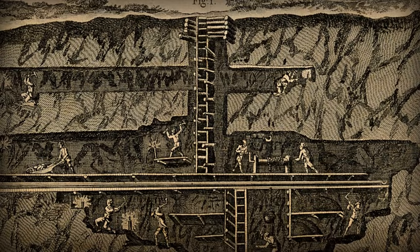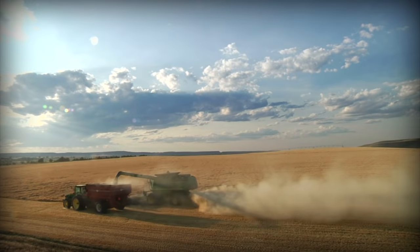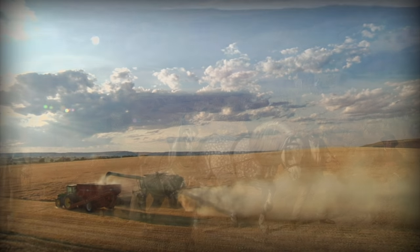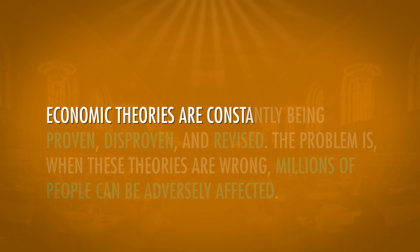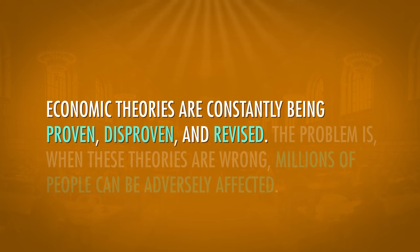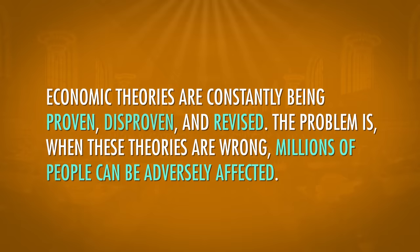But Malthus was writing at the beginning of the Industrial Revolution. He didn't factor in advancements in technology, agriculture production, or transportation. So with the information he had, he was kind of right, but he was still wrong. Economic theories are constantly being proven, disproven, and revised. The problem is, when these theories are wrong, millions of people can be adversely affected. Take Malthus — some scholars combined his ideas with those of Charles Darwin and concluded that giving assistance to poor people and social programs like welfare are actually immoral. This is called social Darwinism, and it's completely wrong.